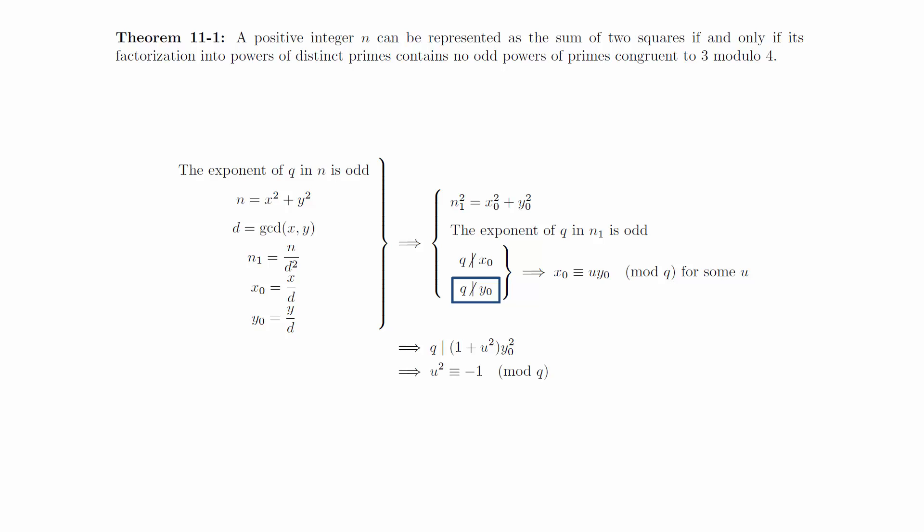In other words, u squared is congruent to negative 1 modulo q. But this implies that negative 1 is a quadratic residue modulo q, which is false since q is congruent to 3 modulo 4.